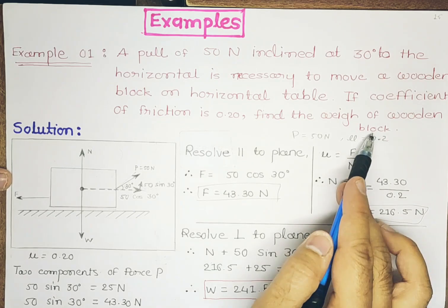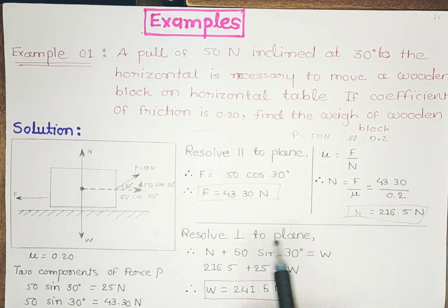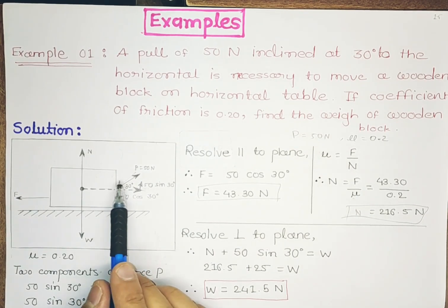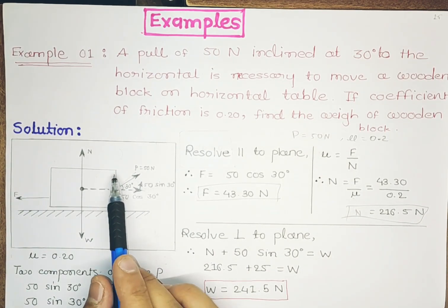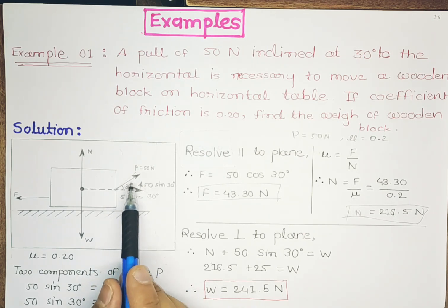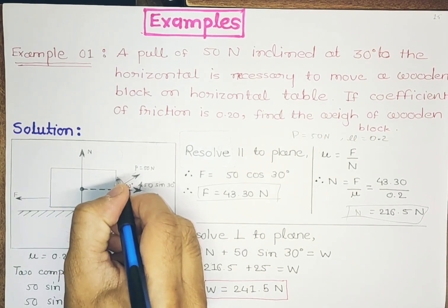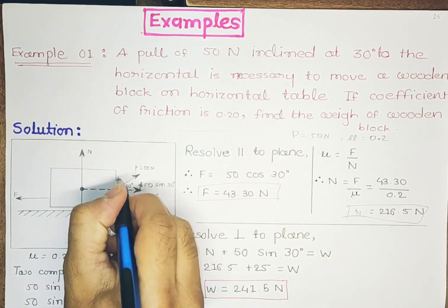Value of F is found, μ is given, P is given. Now we will try and resolve in perpendicular direction. Due to this force there will be some perpendicular resolution, this force 50 Newton will be resolved perpendicularly which I have shown here.